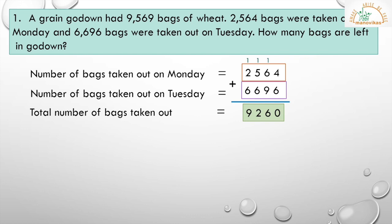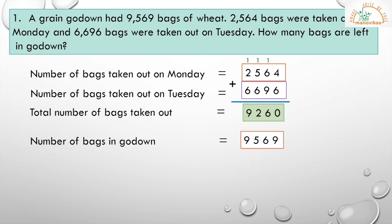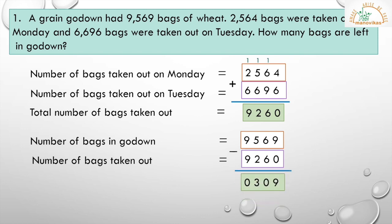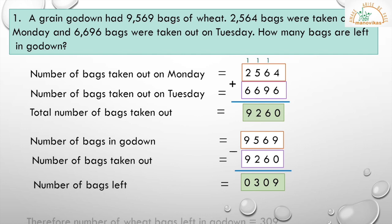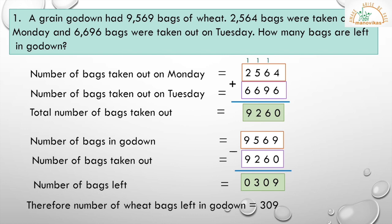Now for the next part — subtraction. Number of bags in godown is 9,569. We are subtracting the total bags taken out, which is 9,260. After subtraction: 9 minus 0 is 9. 6 minus 6 is 0. 5 minus 2 is 3. 9 minus 9 is 0. This is the number of bags left. Therefore, the number of wheat bags left in the godown is equal to 309.